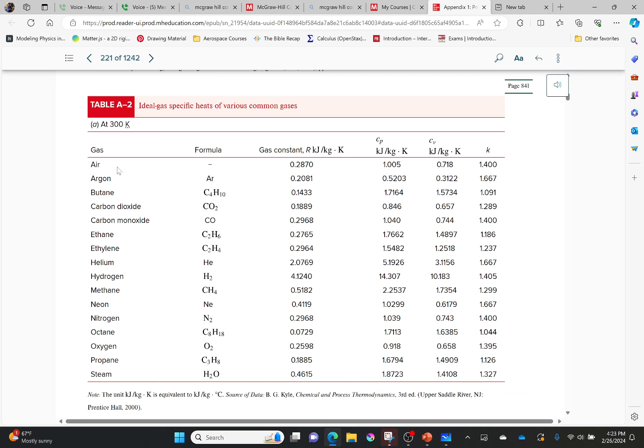So Cp for air is 1.005. For oxygen, it is 0.918, which means it takes more energy to increase the temperature of air than it does to increase the temperature of oxygen.